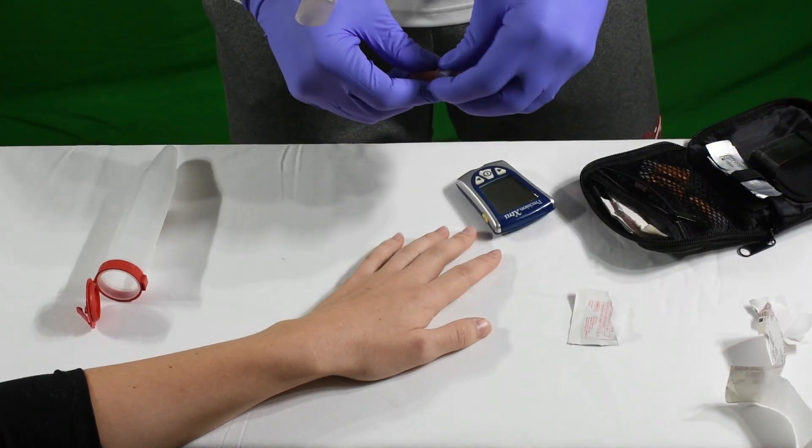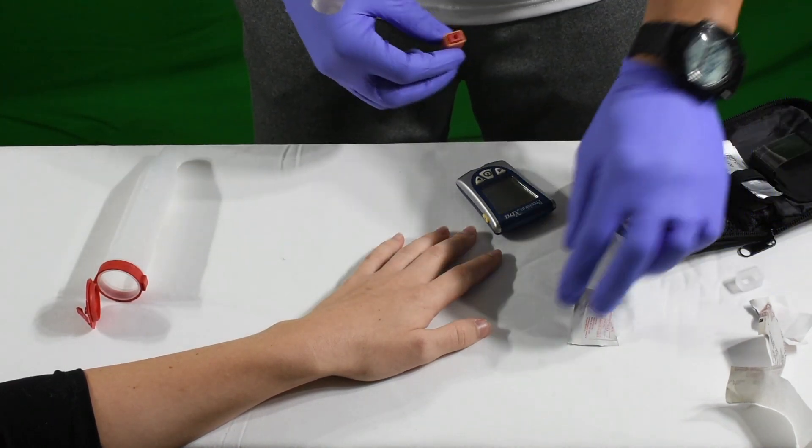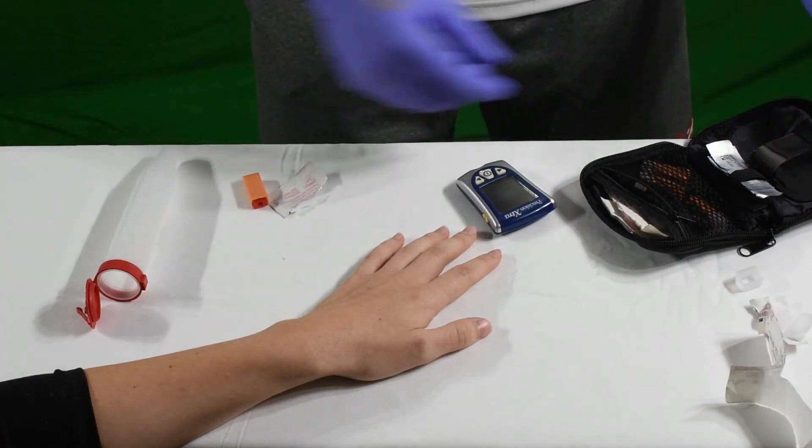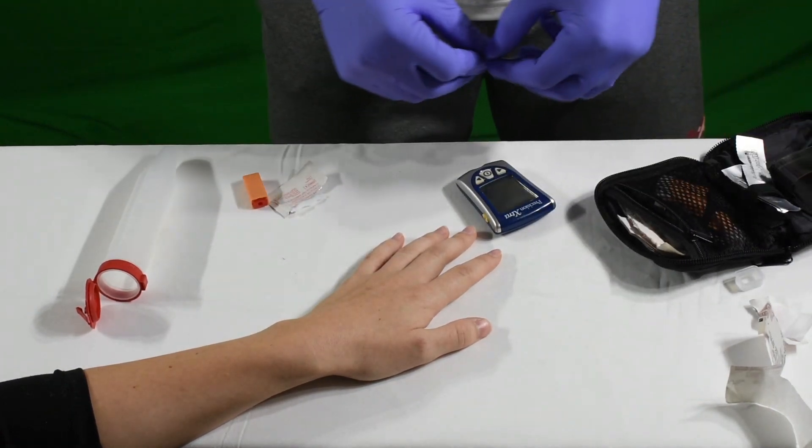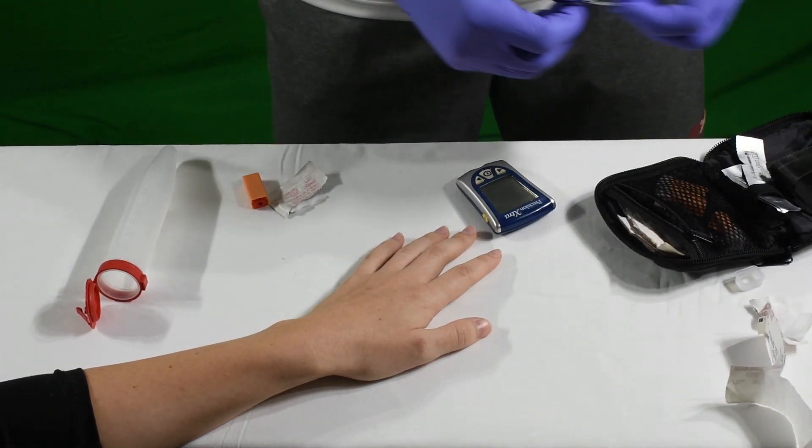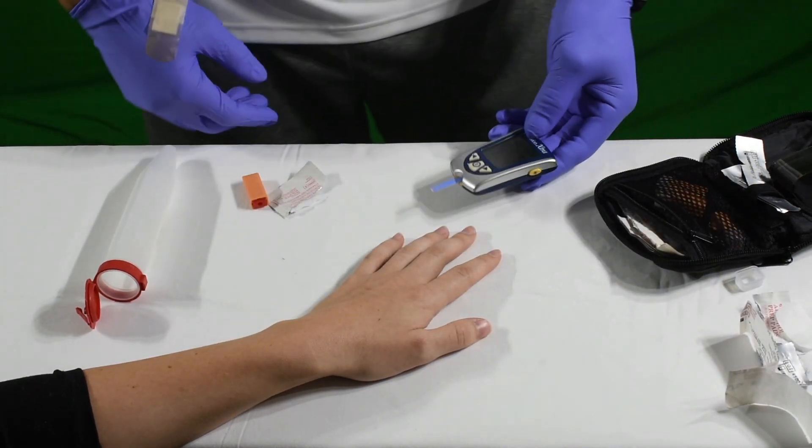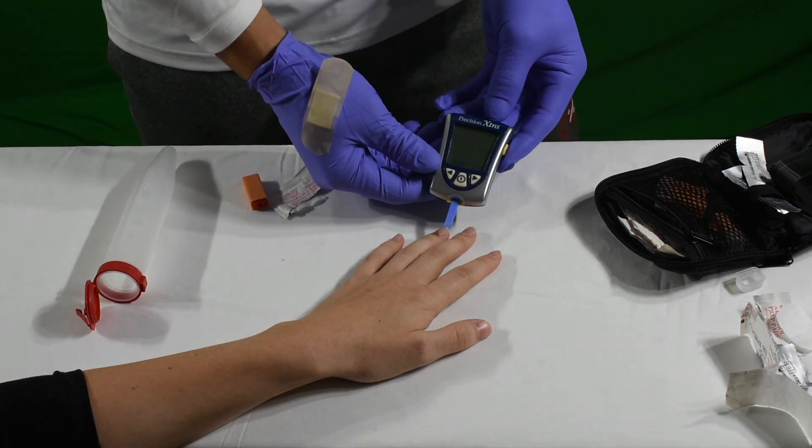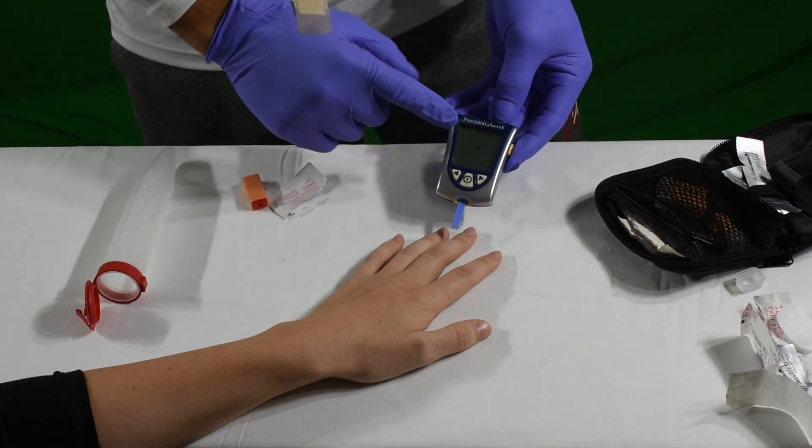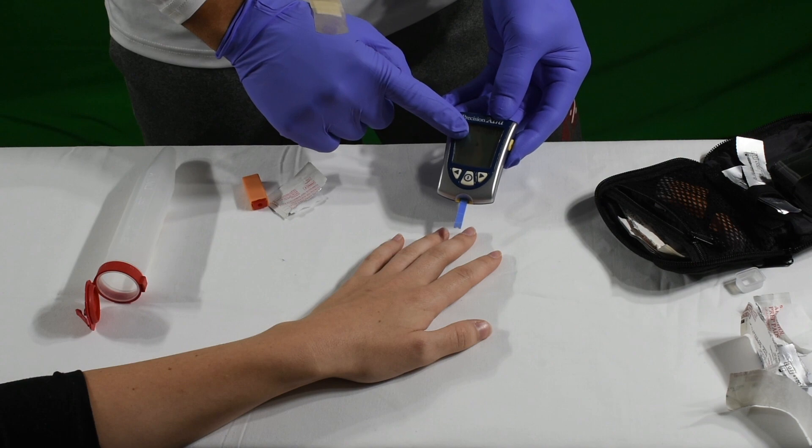There are all different types of lancets out there that you may see. This one you just pop off and apply pressure. You're going to put the test strip in the monitor, the glucometer. Wait for it to load up. It will let you know when it's ready when you see a little blood drop.